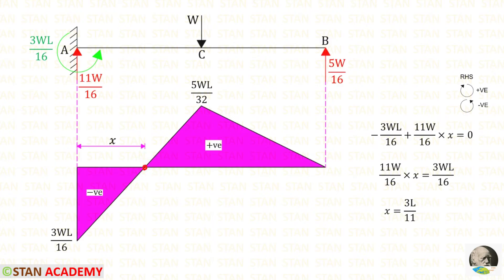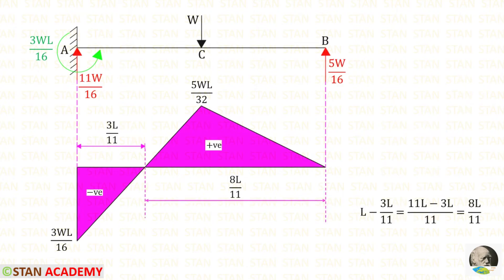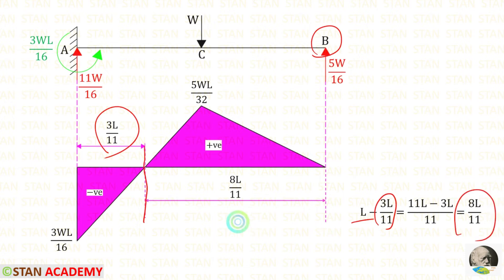At a certain point the bending moment becomes 0. Making a section at distance X from A, with the moment equal to 0, MA acts anti-clockwise (negative) and Ra acts clockwise at distance X (positive). Solving gives X = 3L upon 11. The distance of the point of contraflexure from the right side is L minus 3L/11, which equals 8L upon 11.